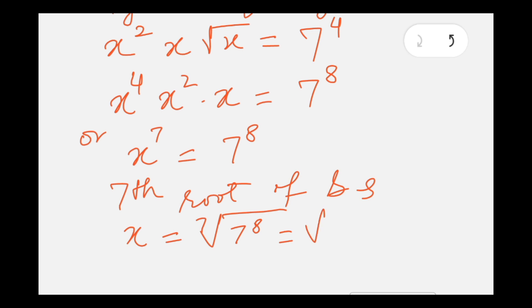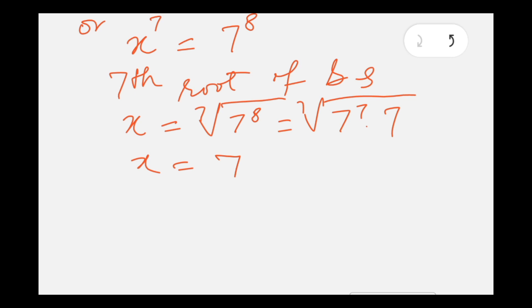7 to the power 8 can further be written as 7 to the power 7 times 7, so 7 to the power 7 will be cancelled by 7th root, which is 7 times 7th root of 7, and this is the value of x. Thanks for watching.